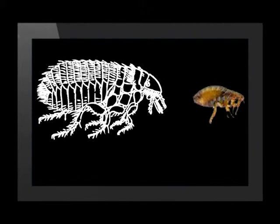Conversely, when we must draw an object that is very small, like a flea, we draw it much bigger than a real life-sized flea so we can see all the details.